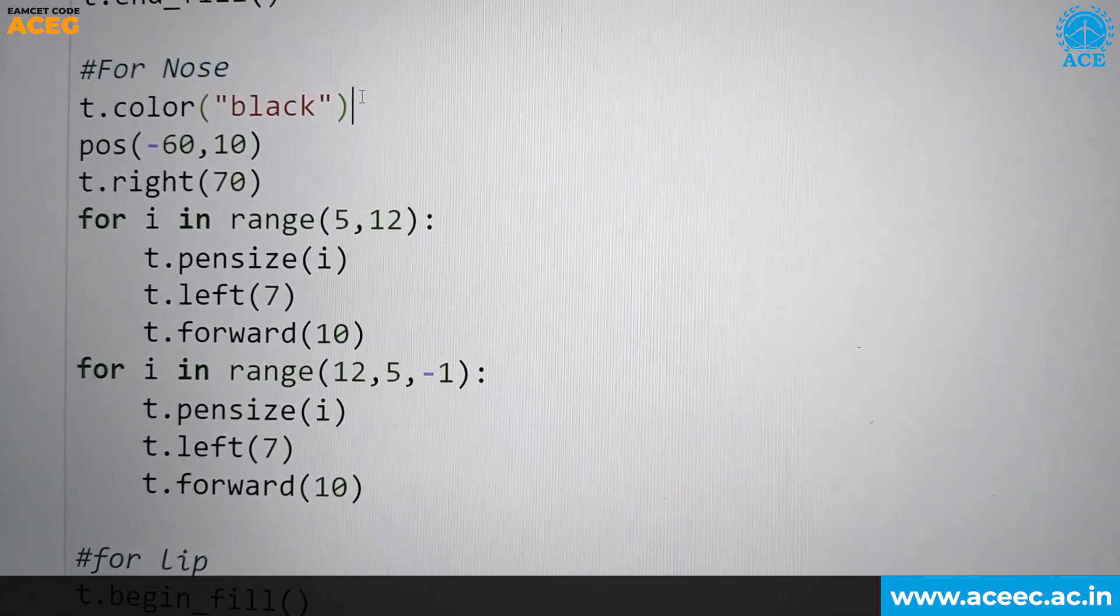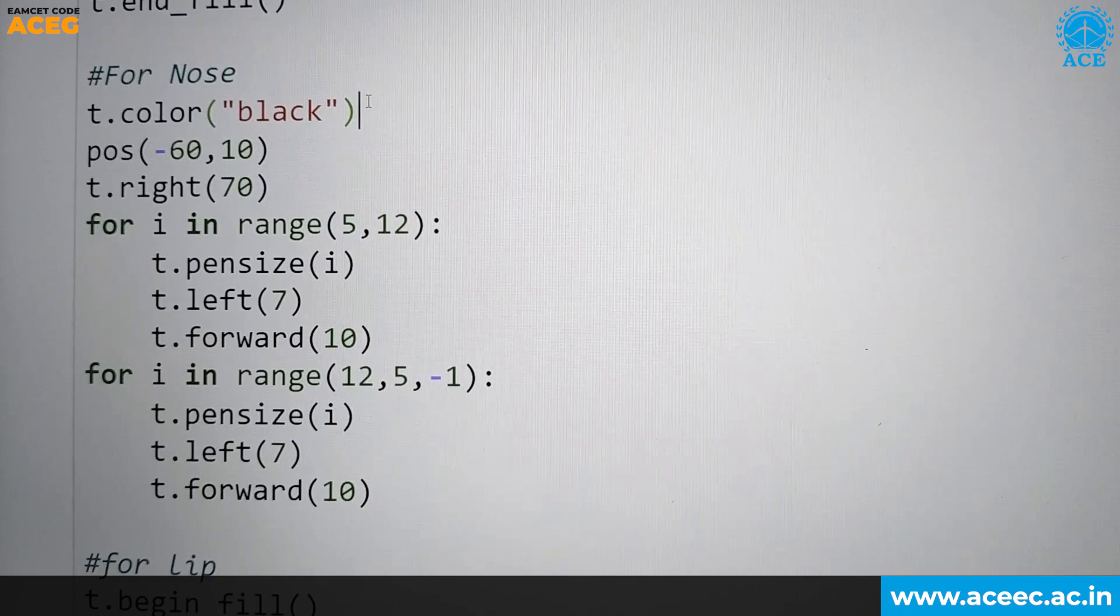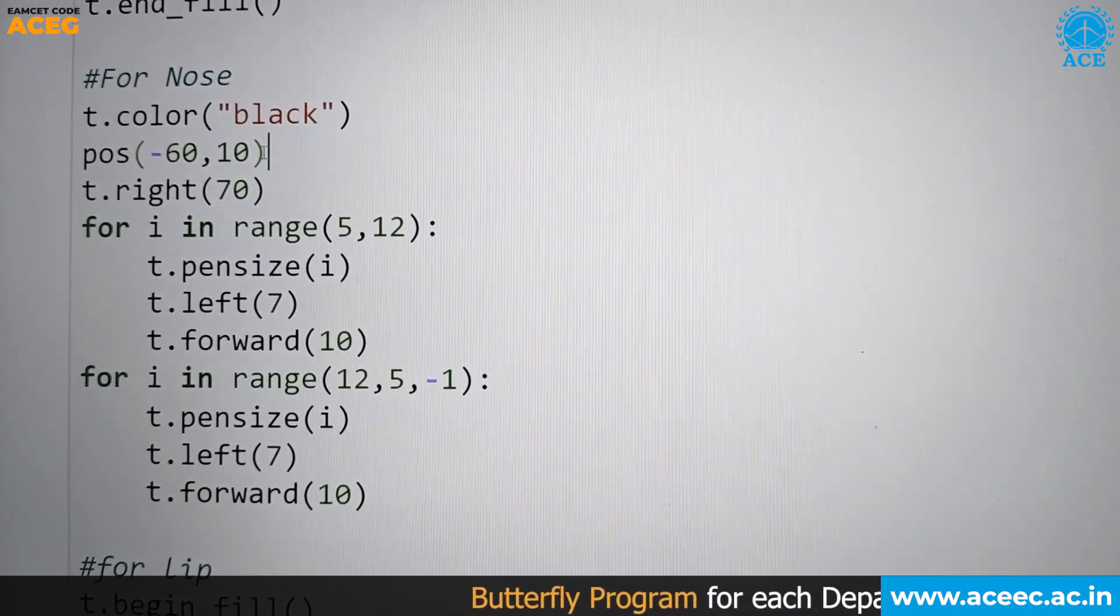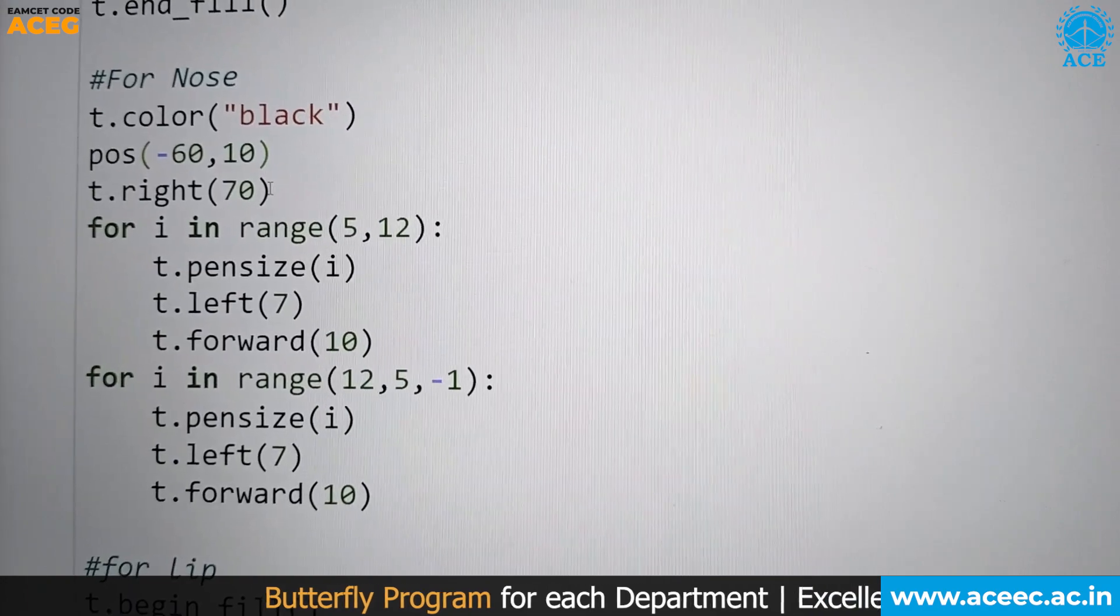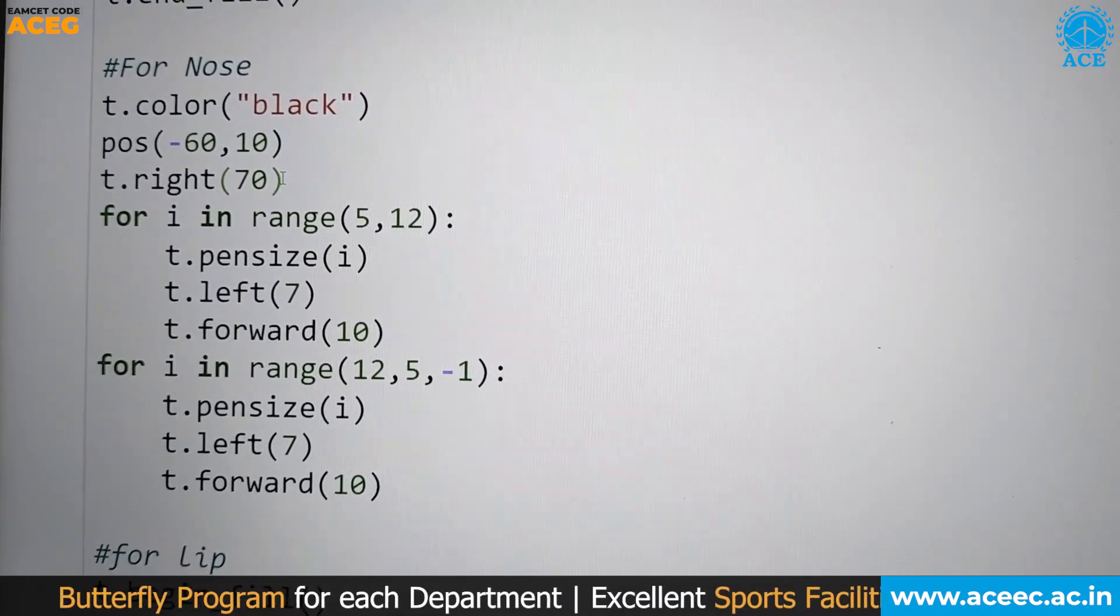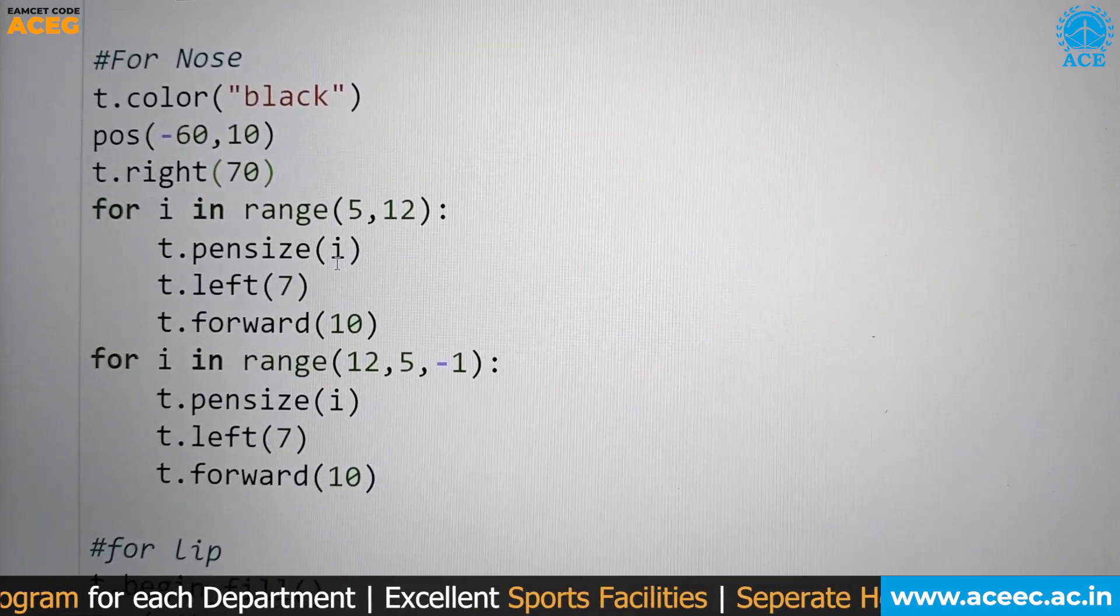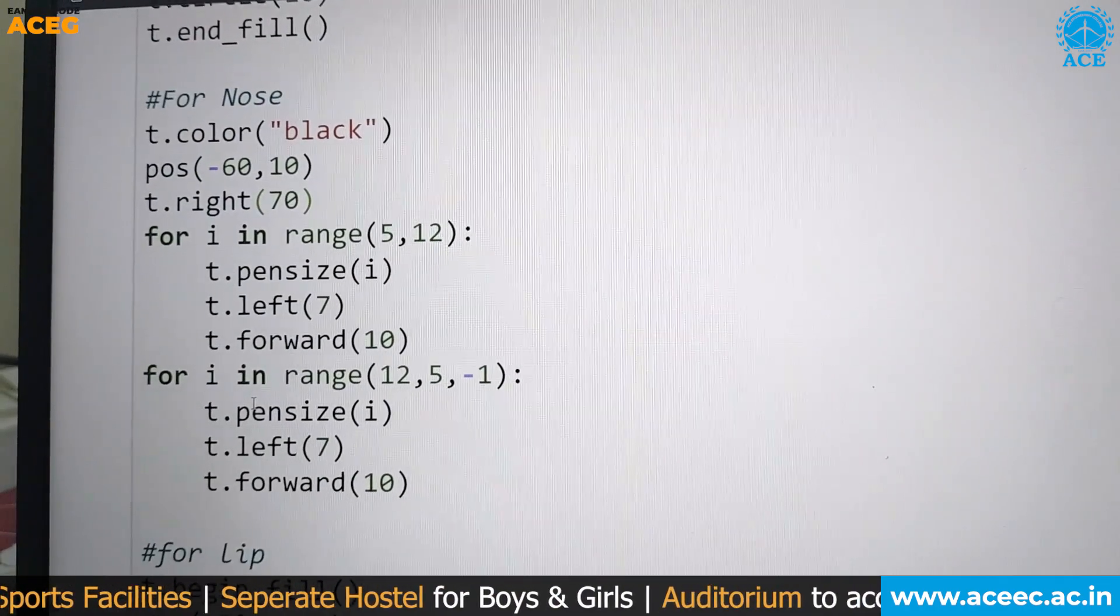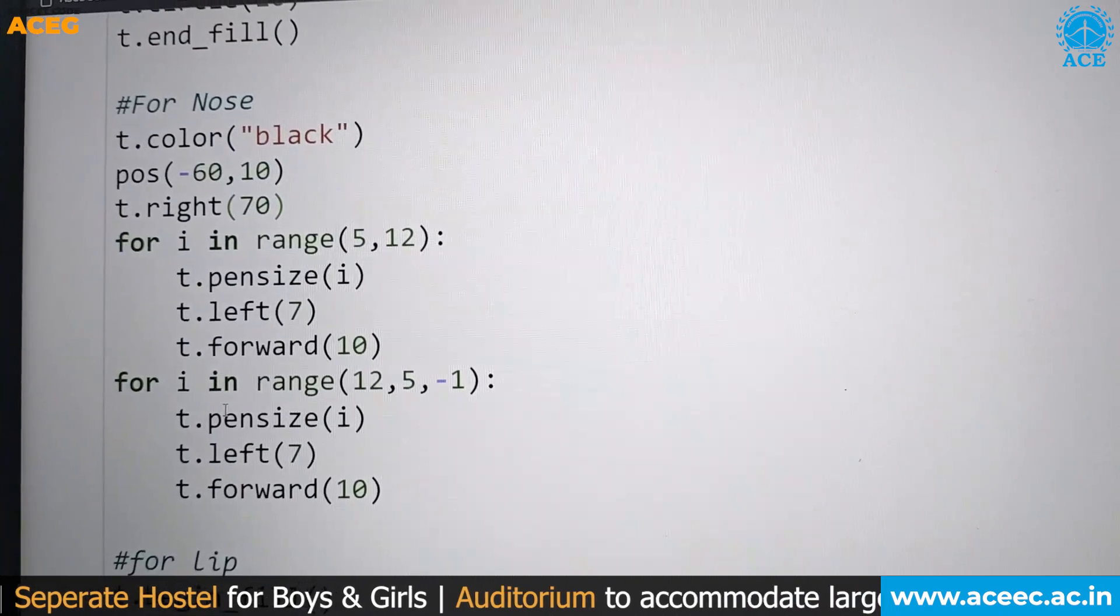To draw nose of Durga Mata, we use color attribute where the color is black. The position of the nose is minus 60 to 10, where the pen position is at 70. The pen size varies from 5 to 12 as the loop follows. We use attributes like left and forward for movement of the pen.